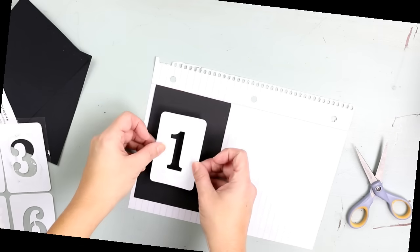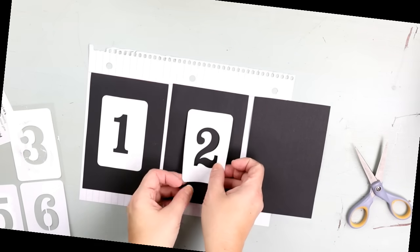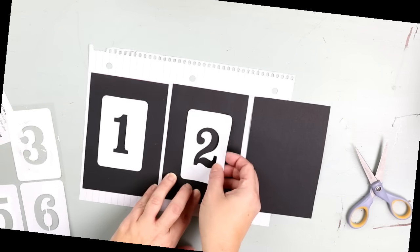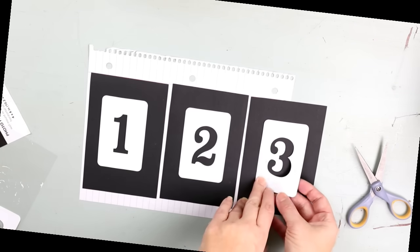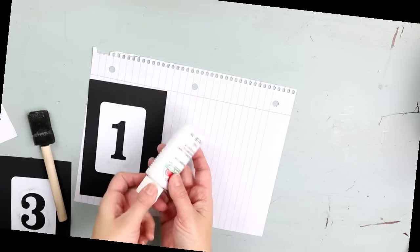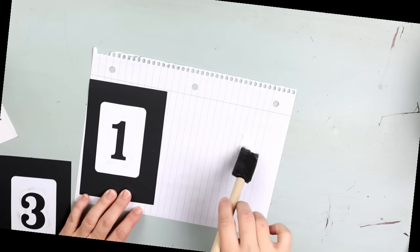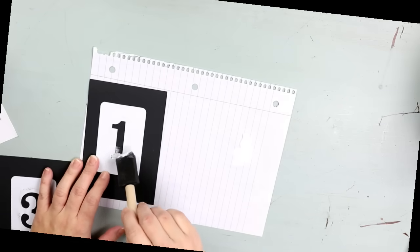Next I'm going to come in with these number stencils. I picked these up at Walmart in their craft section and it's just a set of numbers and you just stick them on. And then I'm going to come in with some white paint that I picked up at Walmart as well. And then I'm just going to dab that in doing two coats on each of the numbers.